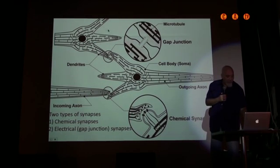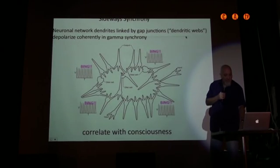There's two types of brain connections among neurons, and I'm going to skip through a lot of this pretty quickly, so if you get lost, don't worry, we'll come back to something in a second. But just to say there's two types of synapses, chemical synapses, this is the chemical synapse shown here, and this is an electrical synapse, which is called a gap junction, and it's gap junctions that mediate gamma synchrony and sideways synchrony, which correlates with consciousness.